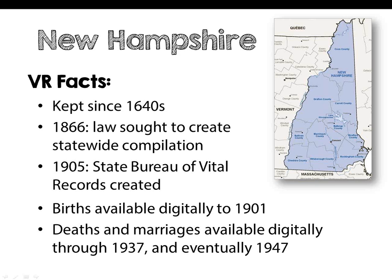Now we're going to talk about the state of New Hampshire. In New Hampshire, vital records have been maintained since about the 1640s. In 1866, a law was sought to create a statewide compilation of all vital records, but it received limited support. By 1905, the New Hampshire State Bureau of Vital Records was created and requested that town clerks extract data from earlier record ledgers onto individual cards, essentially preserving older records from the 17th century to the beginning of the 20th century. Birth records are available digitally up until 1900, and death and marriage records are available digitally through 1937. The continuation of marriage and death records to 1947 will eventually be added to AmericanAncestors.org.